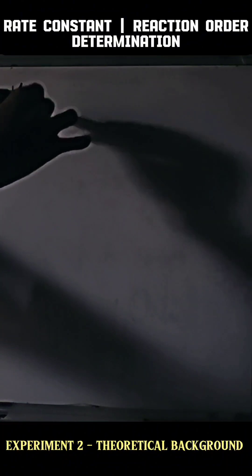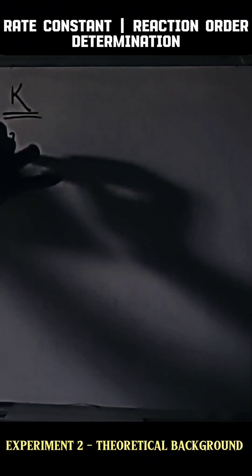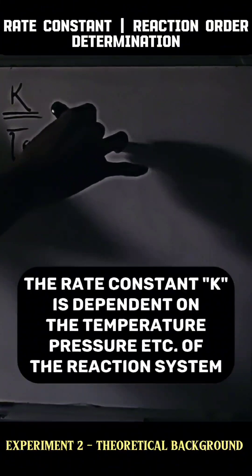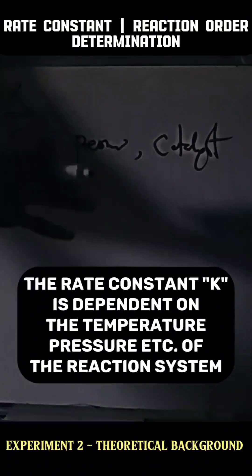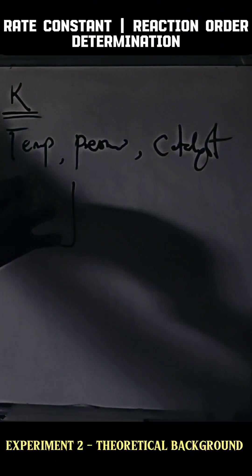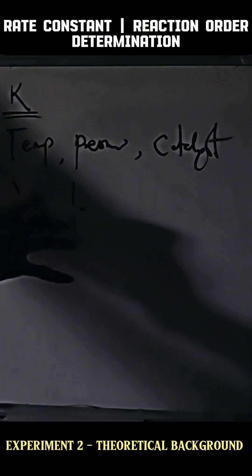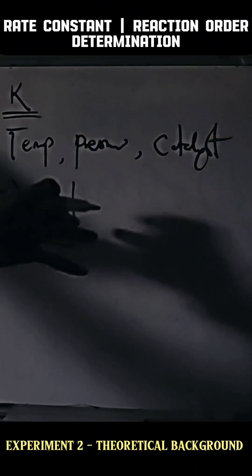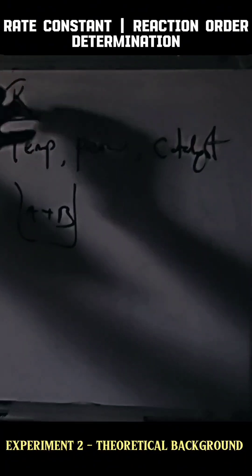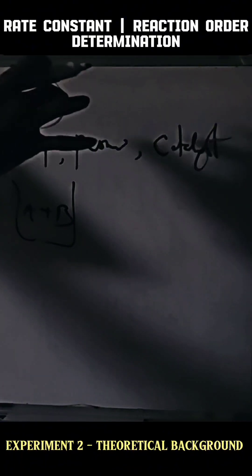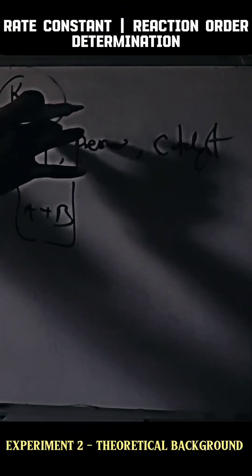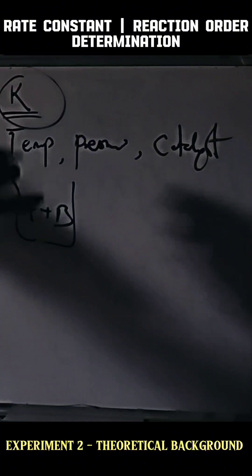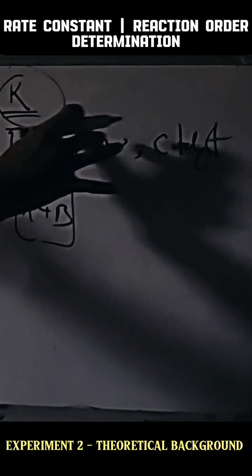The rate constant k takes into consideration variables associated with temperature, pressure, and catalyst — any variable associated with the state of the reaction system. The rate constant is dependent on the reaction conditions surrounding the system, and it can only remain constant when temperature, pressure, catalyst, and similar factors are kept constant.